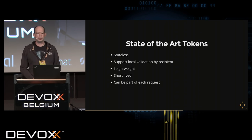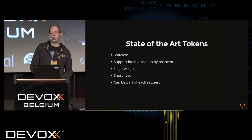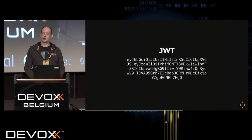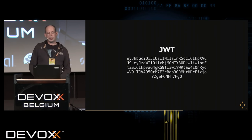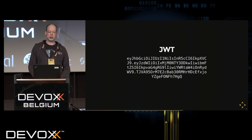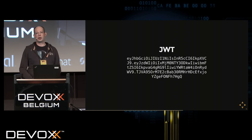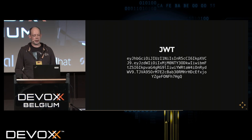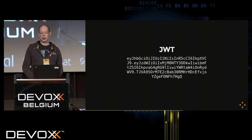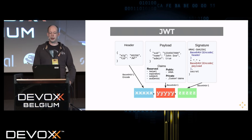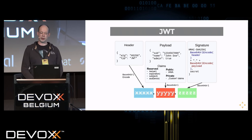A good example of tokens gaining popularity is the JWT (JSON Web Token). It is basically a base64-encoded piece of information with two dots separating three parts: the header, the payload, and the signature. The header states which algorithm is used and that it is a JWT.